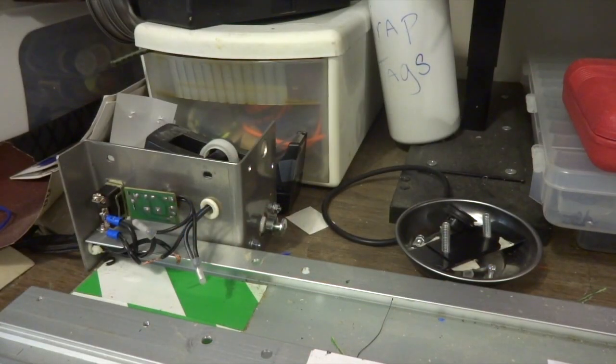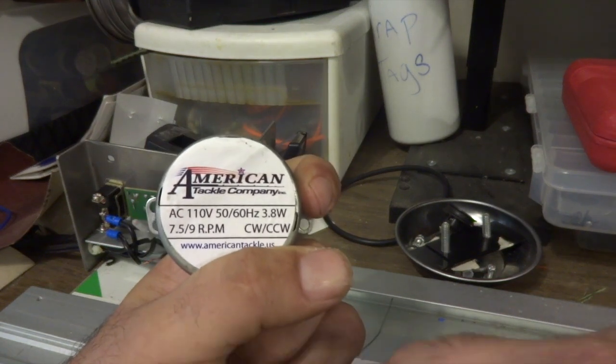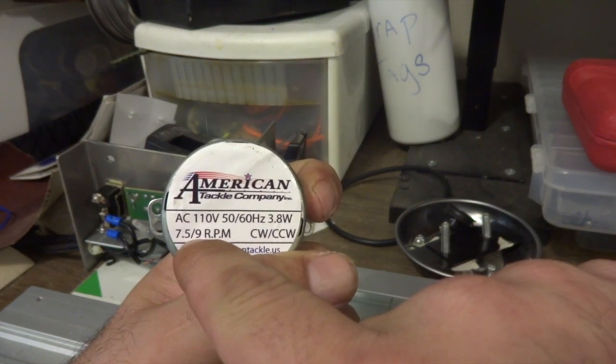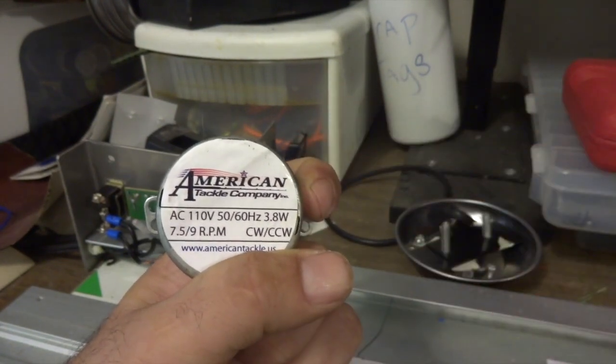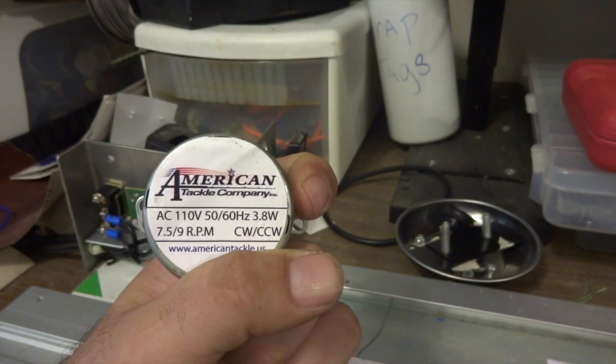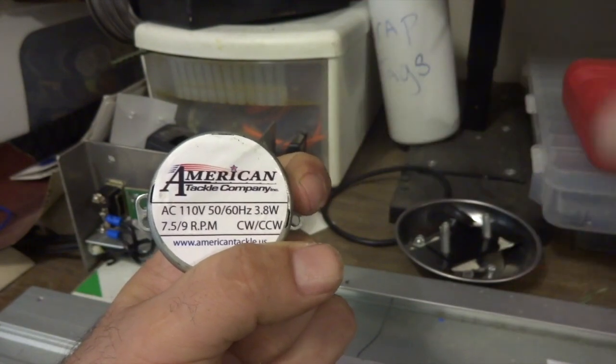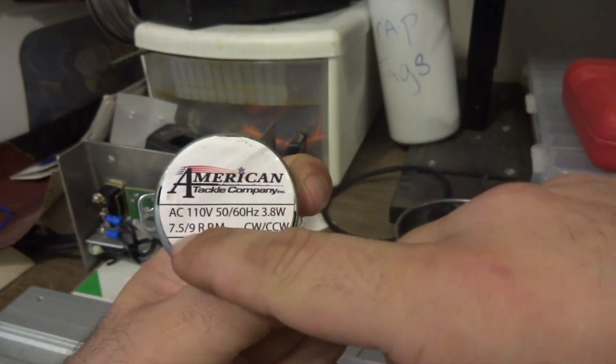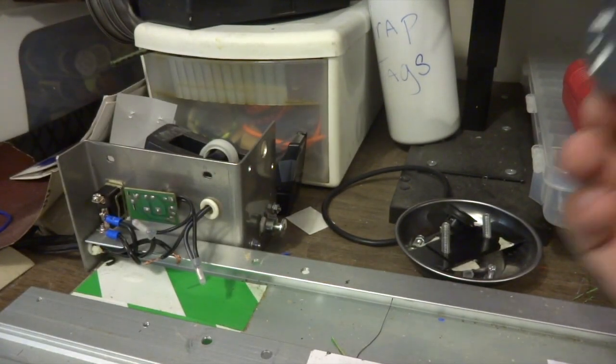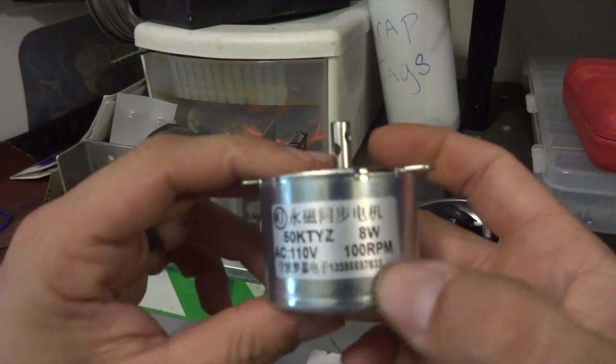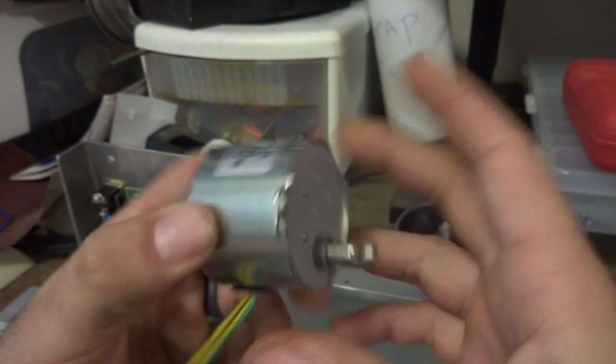Everything's apart. What we took off was this American Tackle motor—this is 7.5 to 9 RPM. This is actually a higher motor, probably a 32 RPM motor, but because of how the pulleys are set up it comes out to be 7.5 to 9 RPM. What we're going to upgrade to is this 100 RPM motor. By itself, yeah, that is way too fast, but I'm looking for about 25 RPM and this is going to fit just perfect.